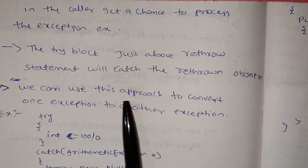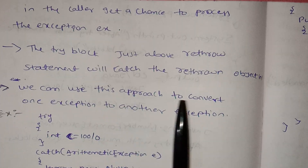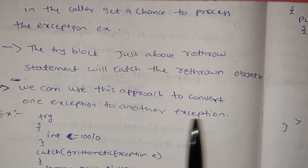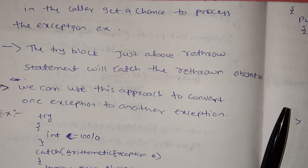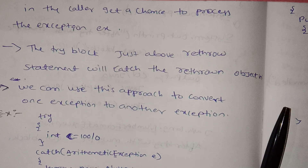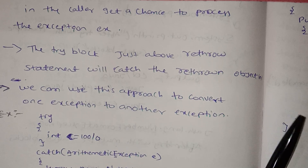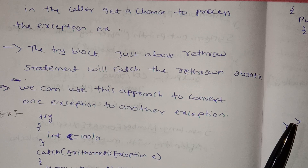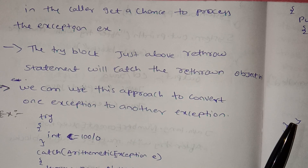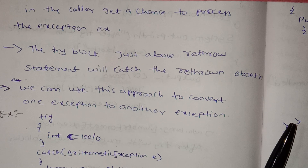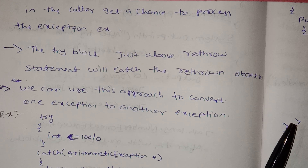We can use this approach to convert one exception to another exception. For example, we need an arithmetic exception and we want to convert it to a null pointer exception — converting one exception type to another.